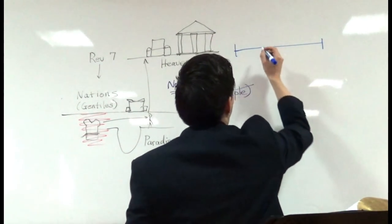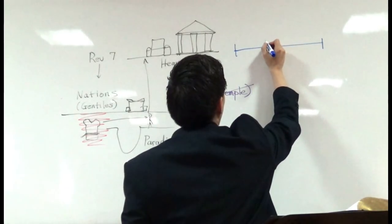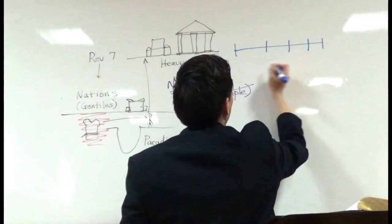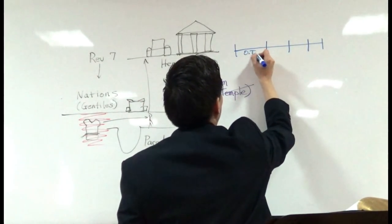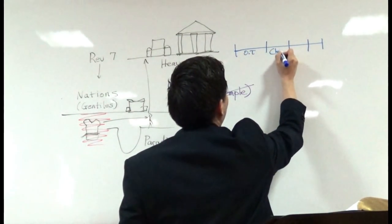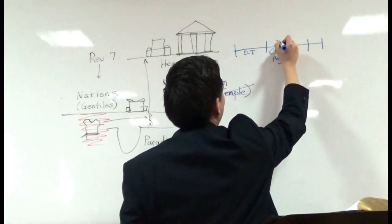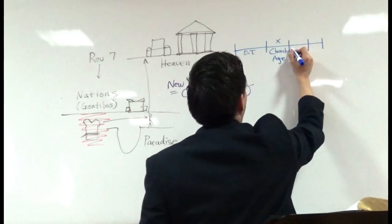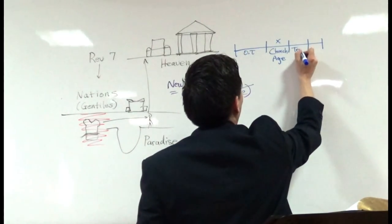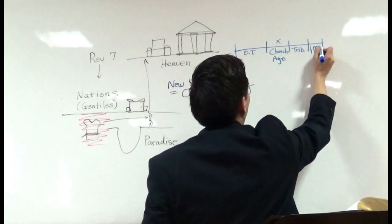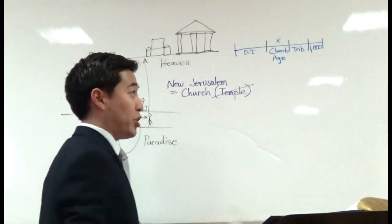I usually draw four timelines with dispensationalism. So right here we have the Old Testament. Here we have the Church Age. And that's where we're at, obviously. And then right here you have the Tribulation. And then here you have the 1,000 year millennium. That covers all the time periods in your Bible.